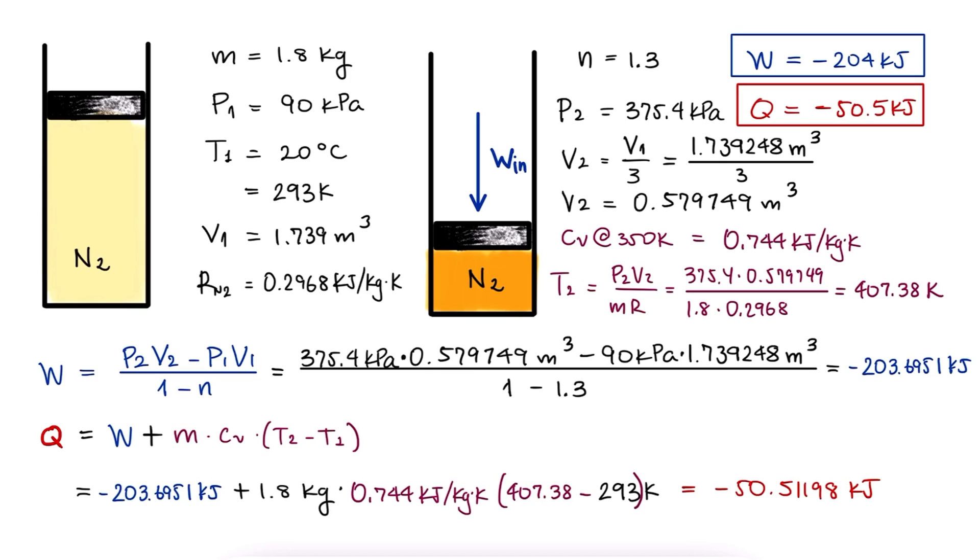And again, this is consistent. A negative heat means that heat is coming out of the system, which makes sense.